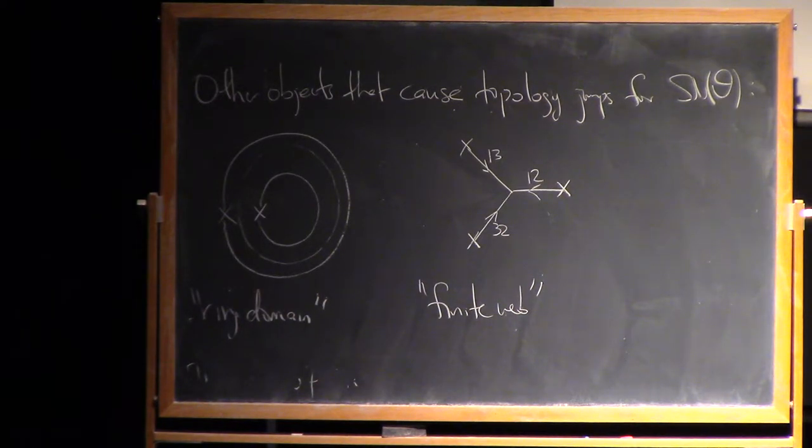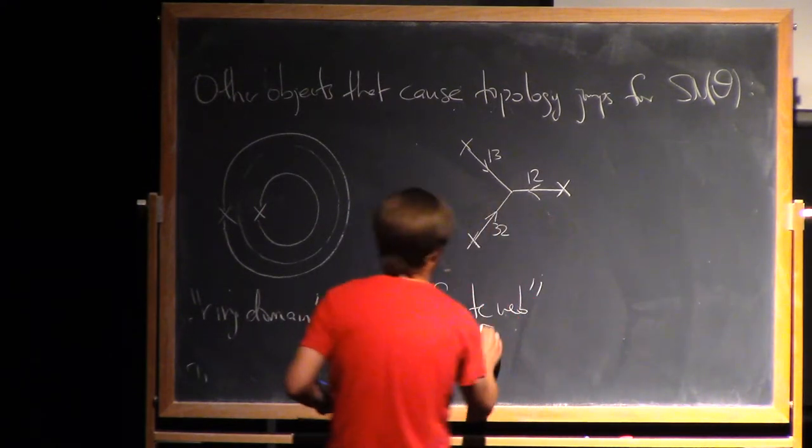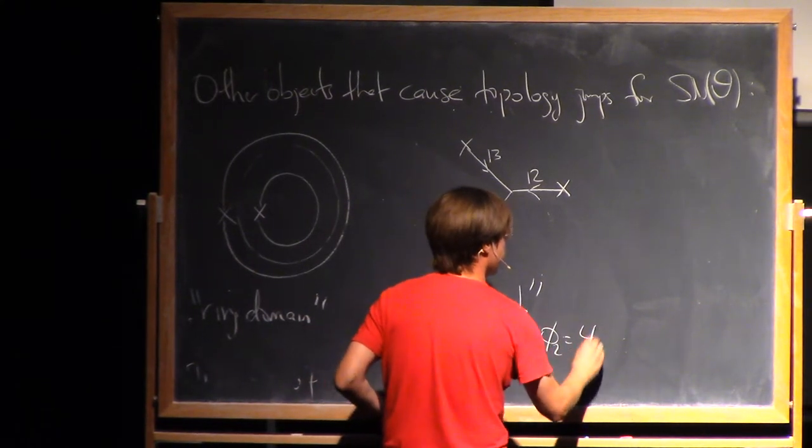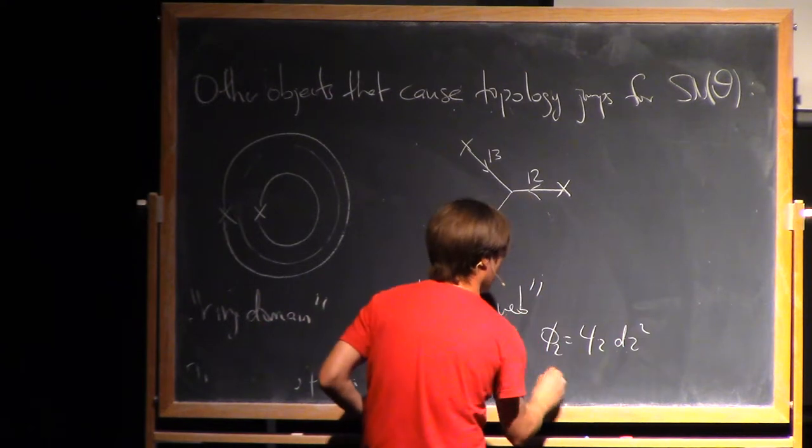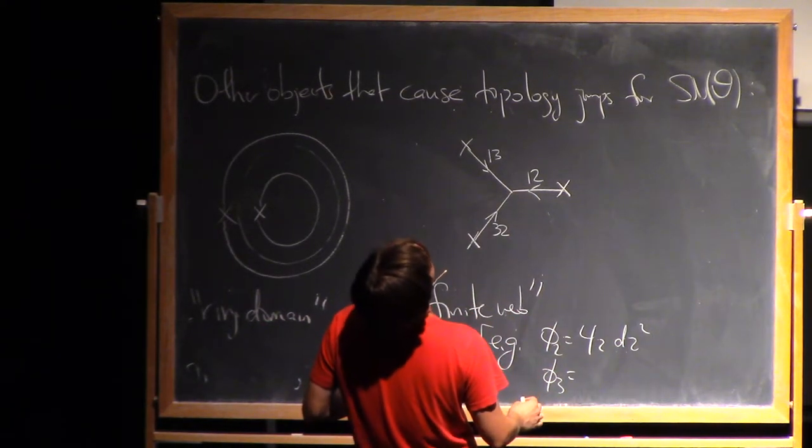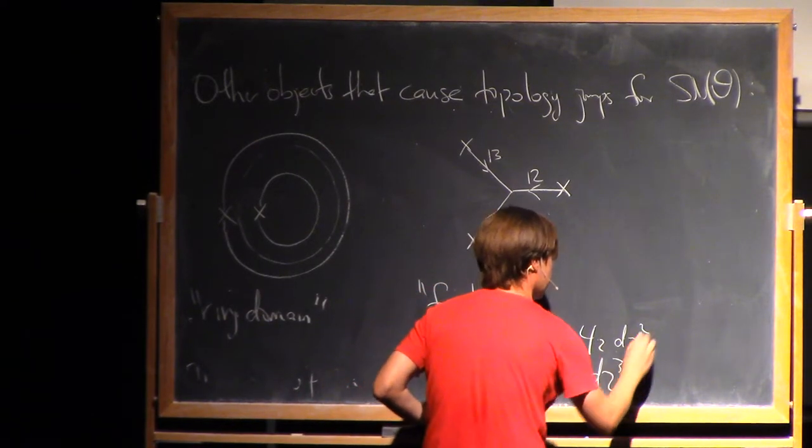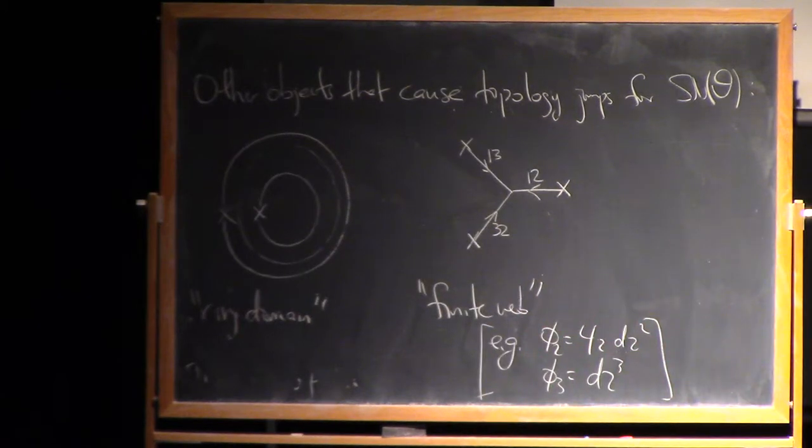Here's the simplest example of that one. So this is an example where I have phi 2 is 4z dz squared, and phi 3 is epsilon, whatever epsilon is. Epsilon is 1. Phi 3 is dz cubed. So there, I'll just show you what the pictures look like for that example. So as we change the phase, here's the spectral network. And now, as we change the phase, it starts to look like this.